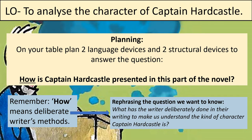Go back to that list of structural devices if you need to — rewind the video a little — and pick two that you've spotted. Maybe it's dialogue: find a quotation where he's really having a go at a student, being harsh to them. Think about what he says and how it's harsh, blunt, and antagonistic. Then find another language technique — maybe personification, or that simile about his legs being as hard and thin as ram's legs. Complete that table, as it's going to help you plan your answer to the question later in this lesson. Pause the video if you need to.